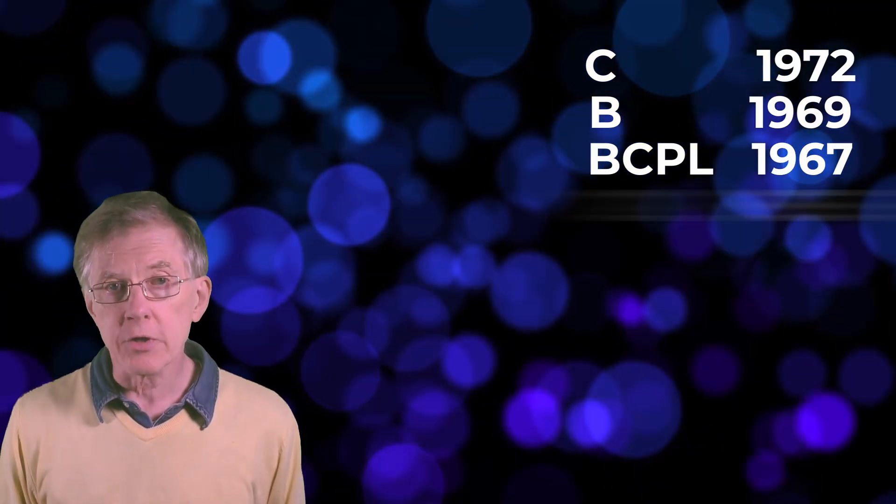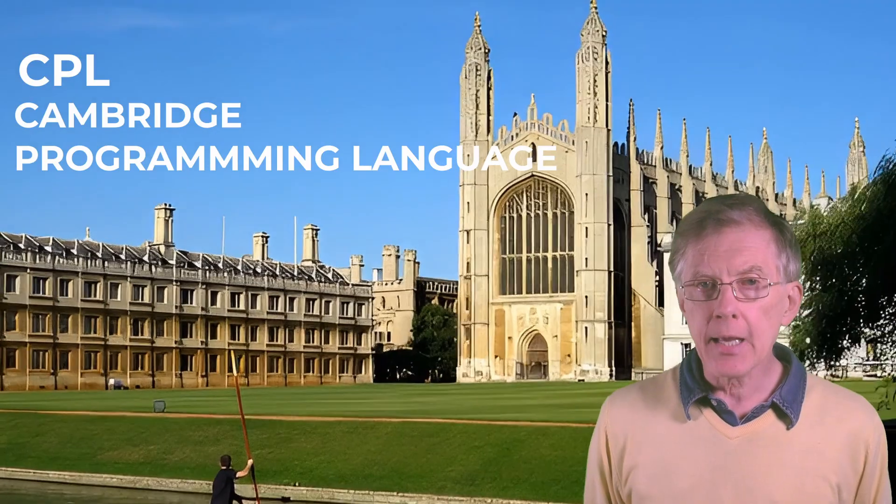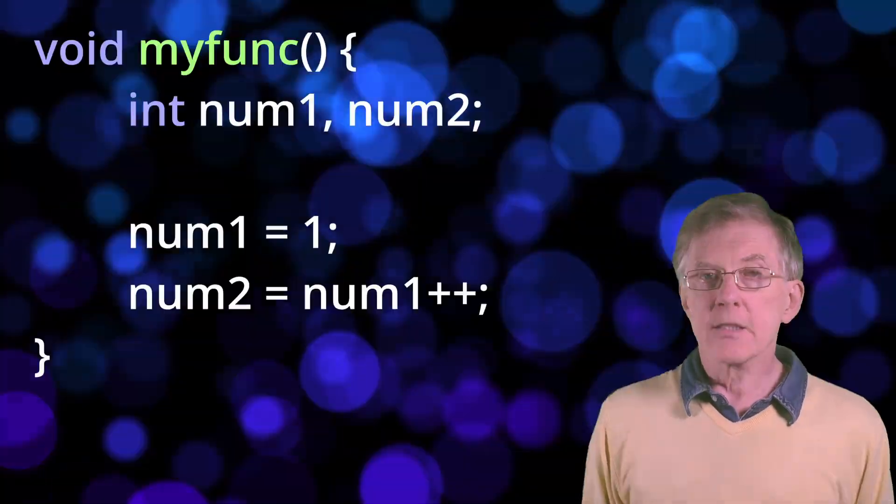B came from a language called BCPL, the Basic Combined Programming Language, which followed on from CPL, the Cambridge Programming Language.